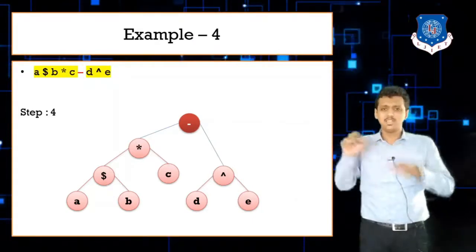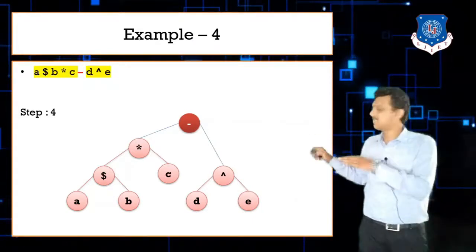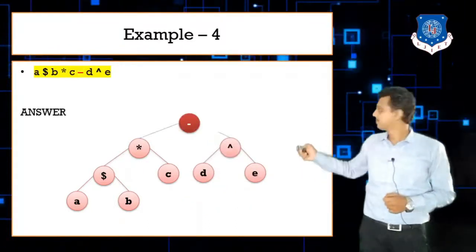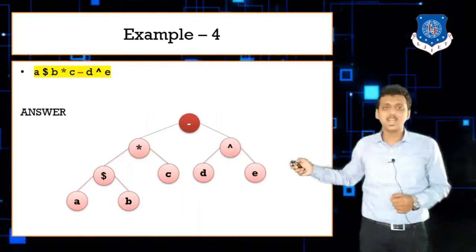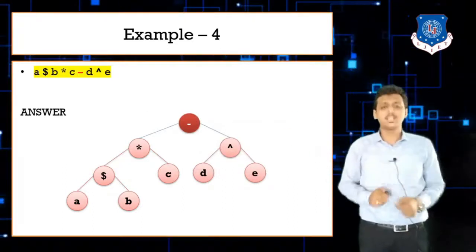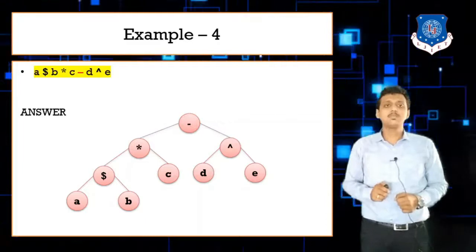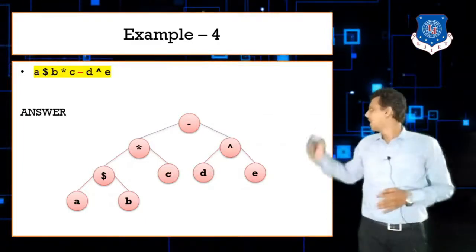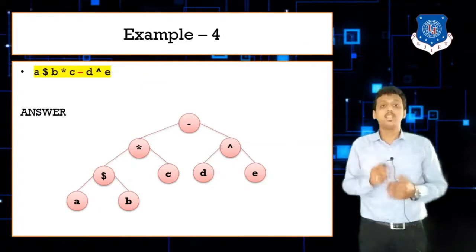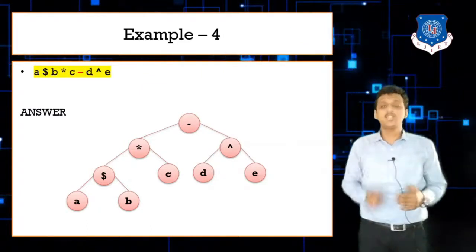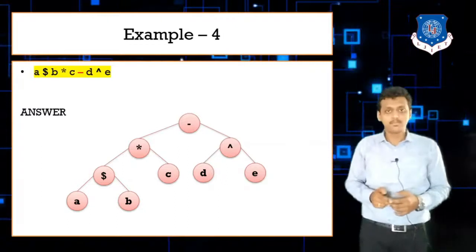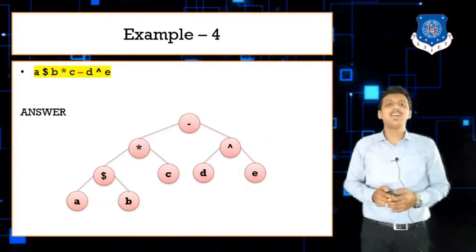After balancing the tree properly, the final answer shows minus as the root, with the star sub-tree on the left and the caret sub-tree on the right. This completes converting the infix expression into the expression binary tree.